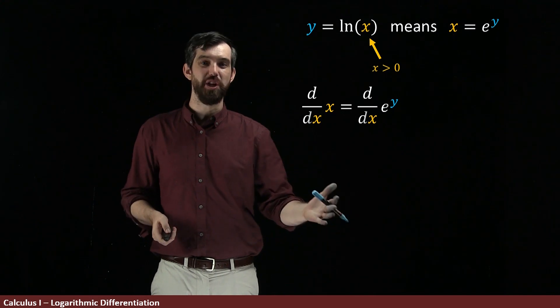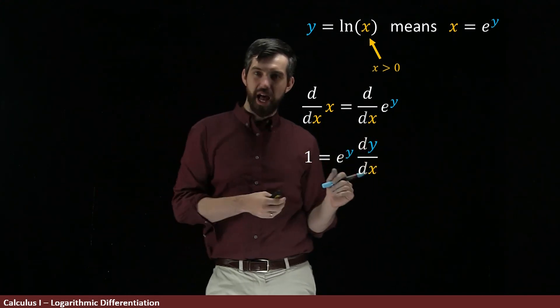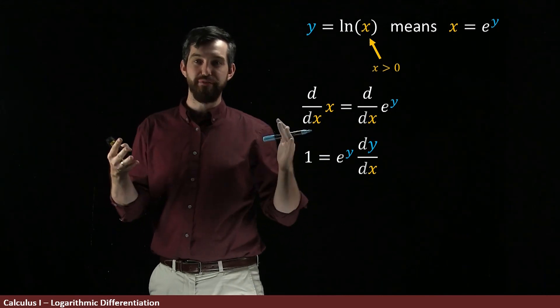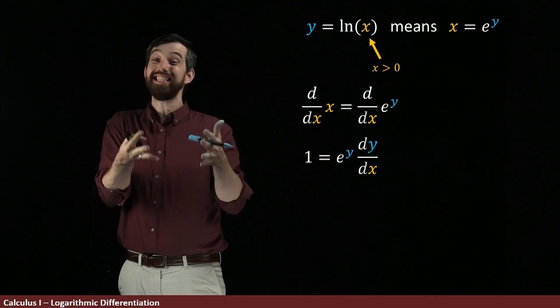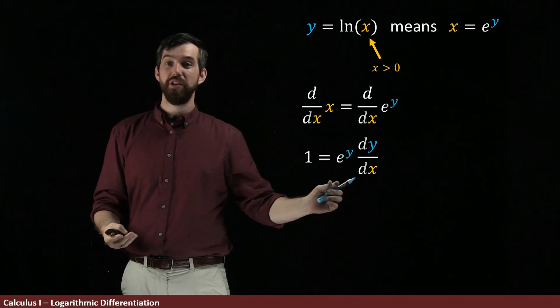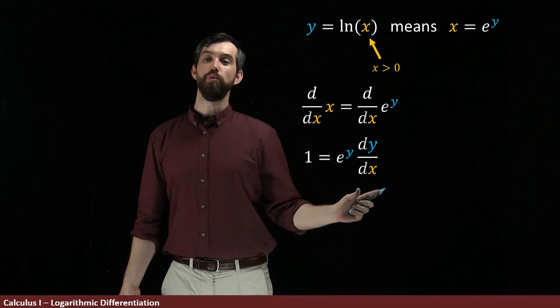Derivative with respect to x of x is just going to be 1, but for the other side, we're going to apply the chain rule. e to the y has an outside function, e to the whatever, and an inside function of the y. So derivative of e to the y is just e to the y, and then the derivative of the inside, dy/dx.